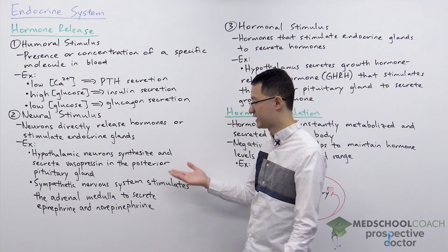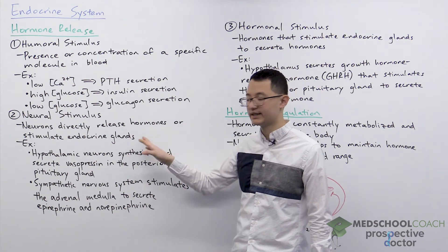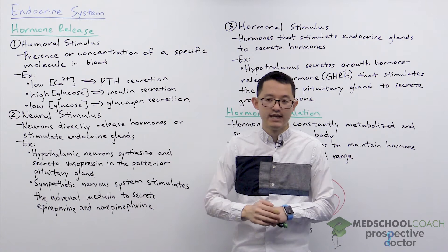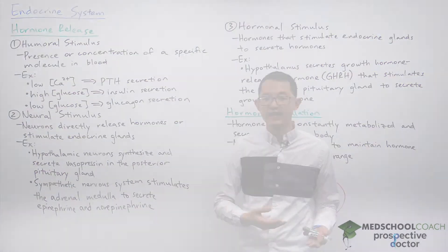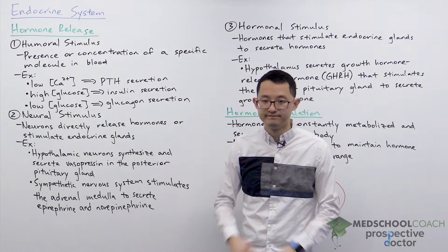An example of the second type — neurons stimulating endocrine glands — can be seen in the diagram. Neurons in the sympathetic nervous system stimulate the adrenal medulla to release epinephrine and norepinephrine during fight or flight responses.